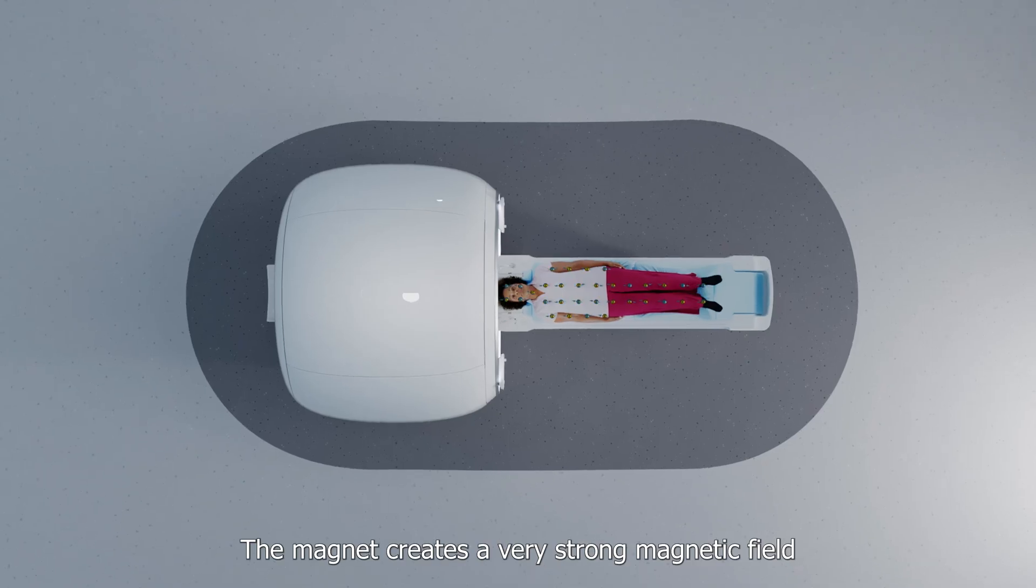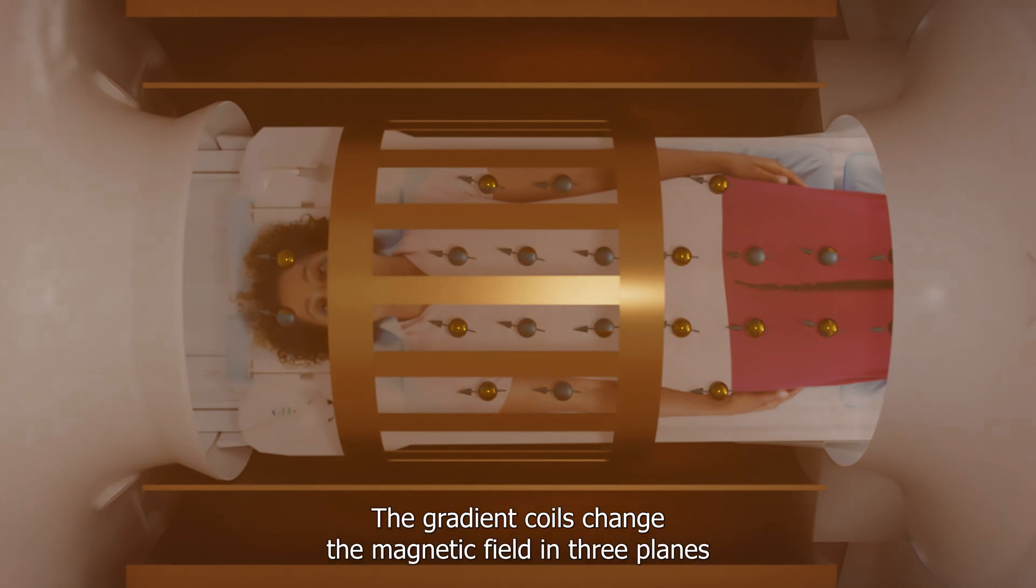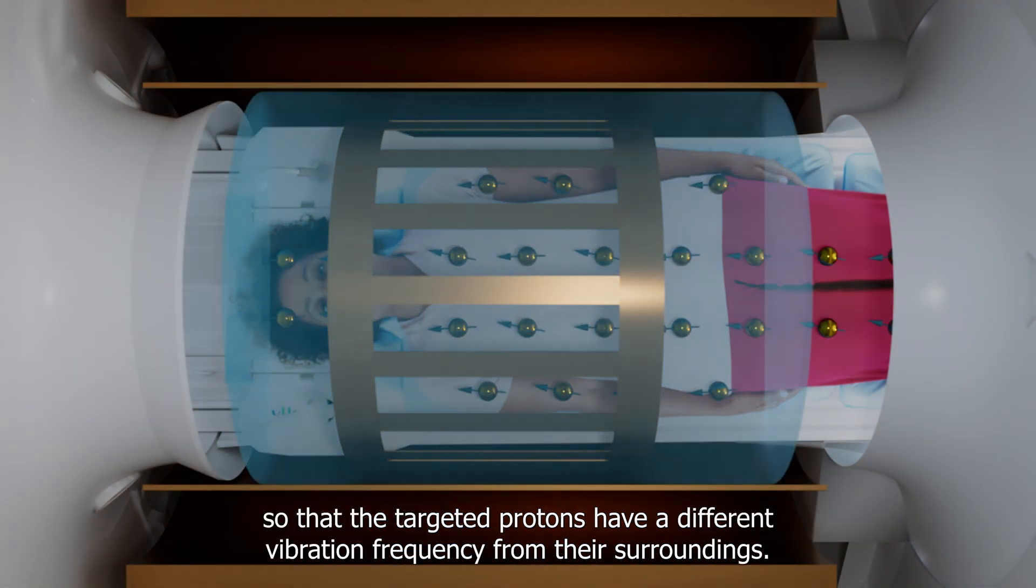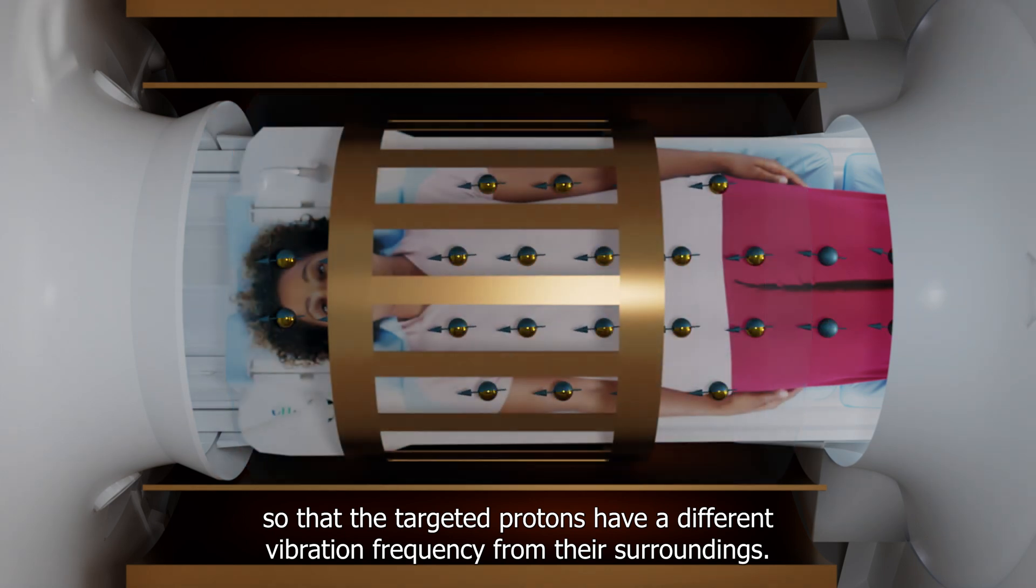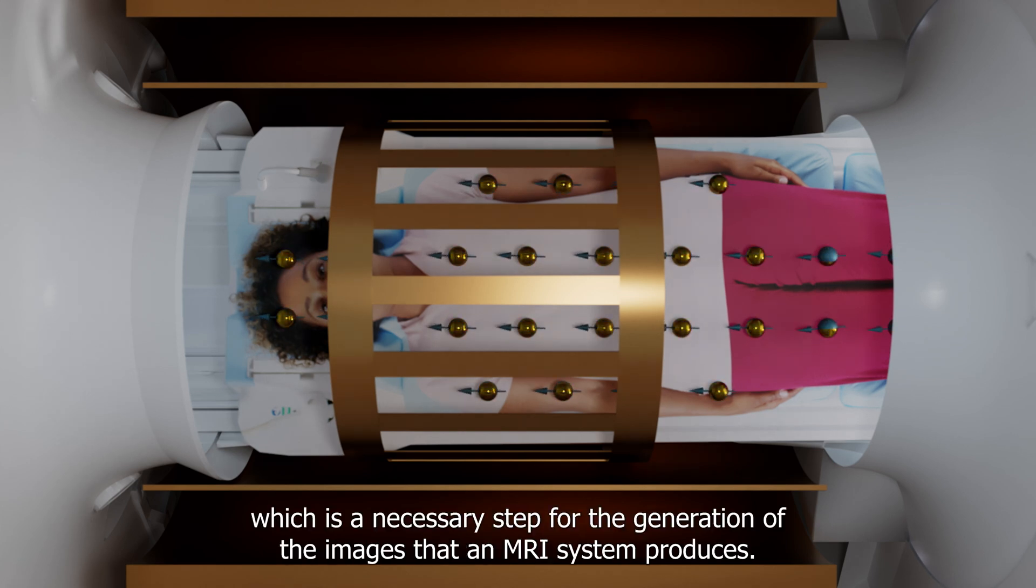The magnet creates a very strong magnetic field that aligns the protons in the body. The gradient coils change the magnetic field in three planes so that the targeted protons have a different vibration frequency from their surroundings. This allows localization of the protons, which is a necessary step for generating the images that an MRI system produces.